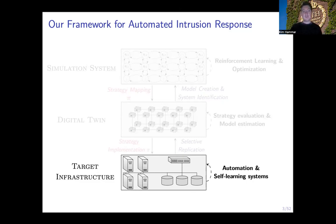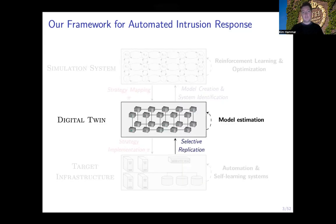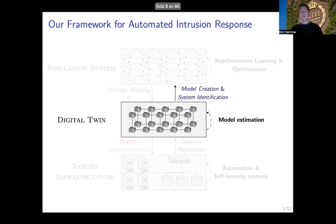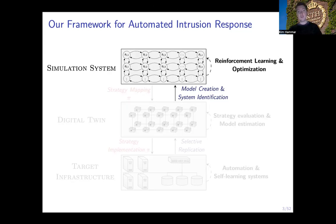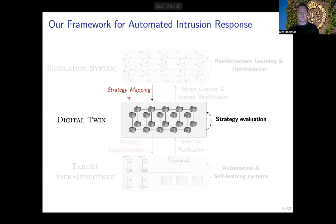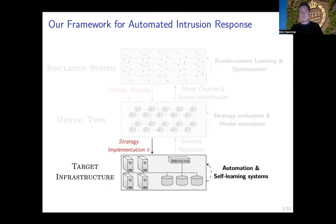The first step of our method is that we take the configuration of this infrastructure and emulate it to create a digital twin — a virtual replica of the real system. We then use the twin to run experiments and collect measurement data, based on which we identify a mathematical model of the system. Given that model, we apply numerical methods, for example reinforcement learning, to compute optimal response strategies, which we extract from the simulation environments and evaluate on the twin. If that evaluation is deemed successful, we may also implement them on the target infrastructure.